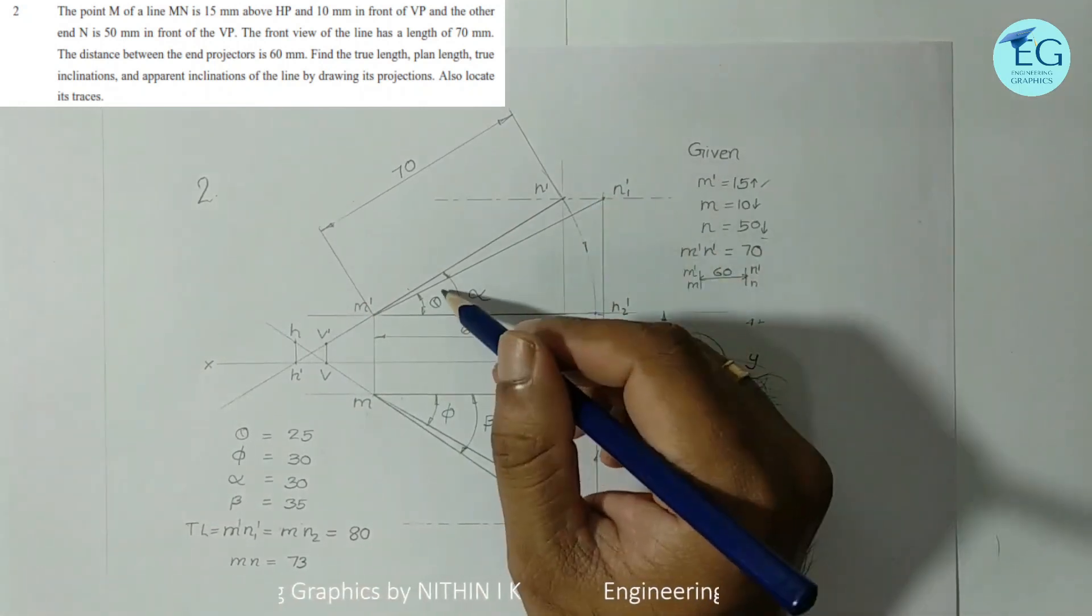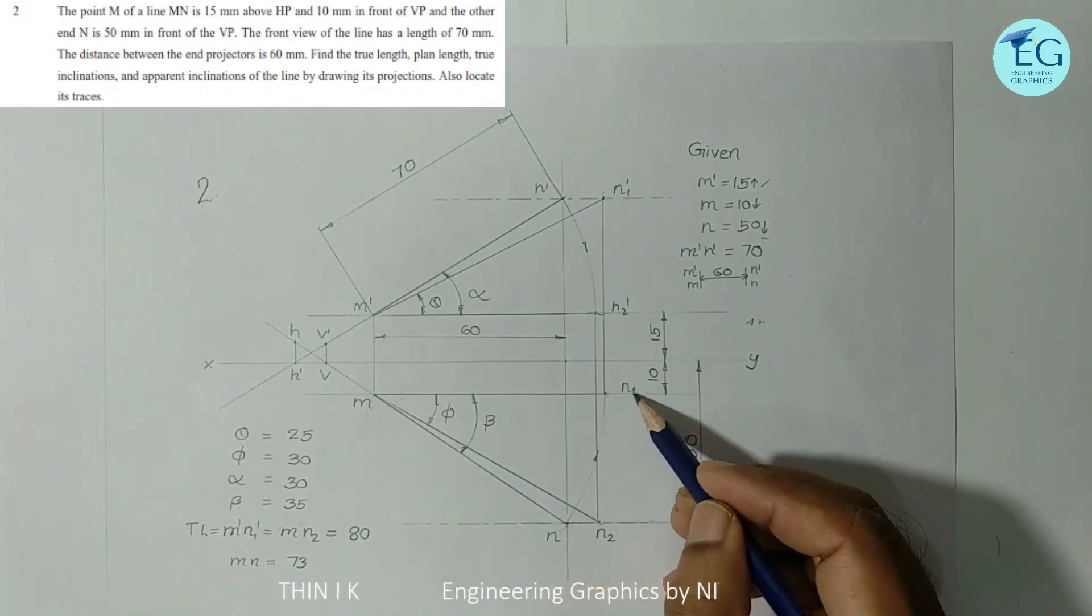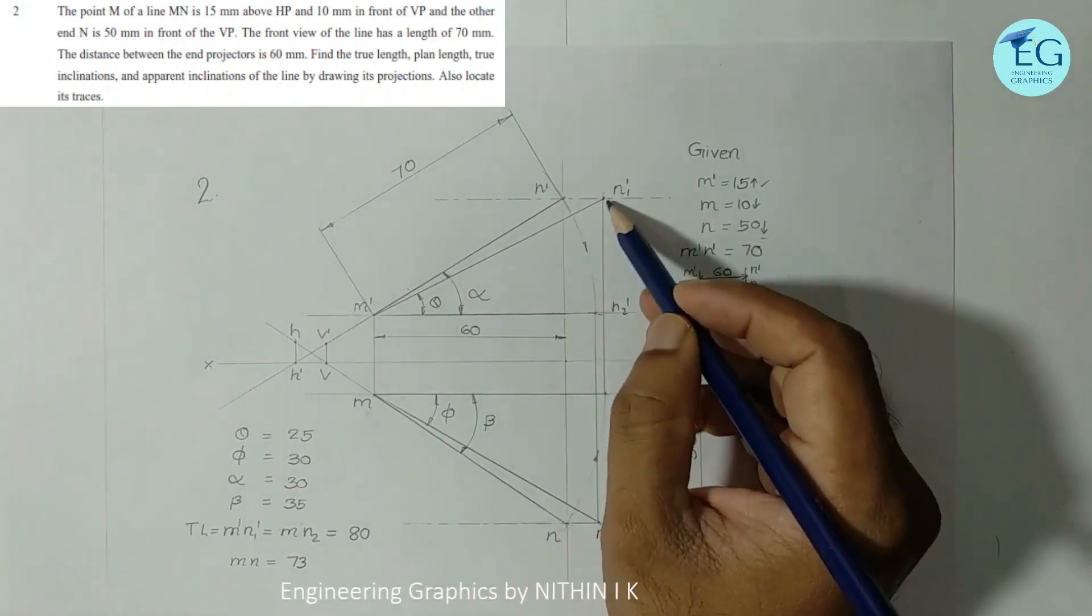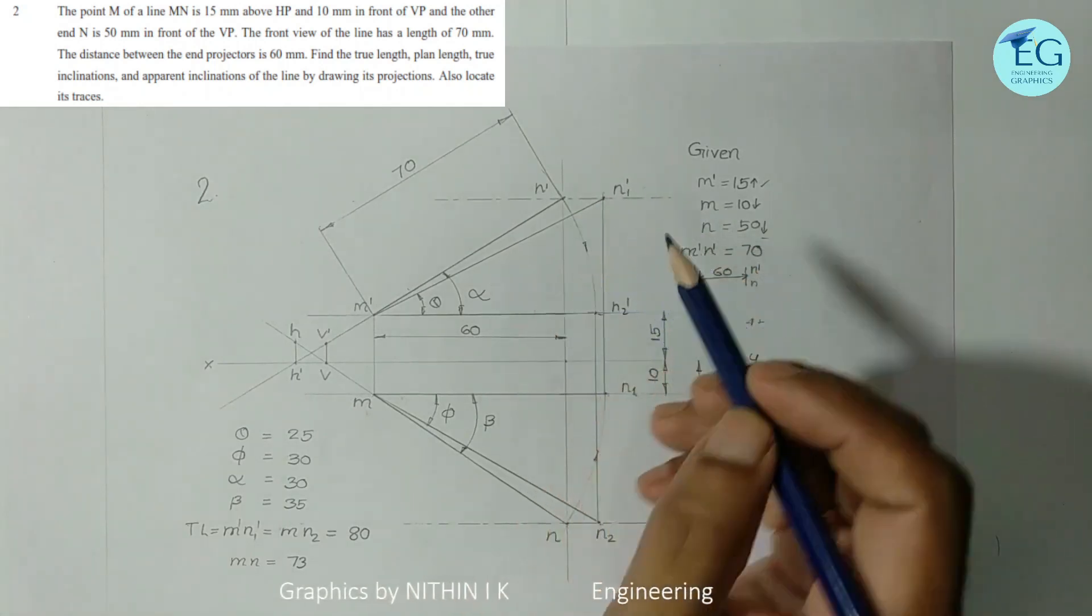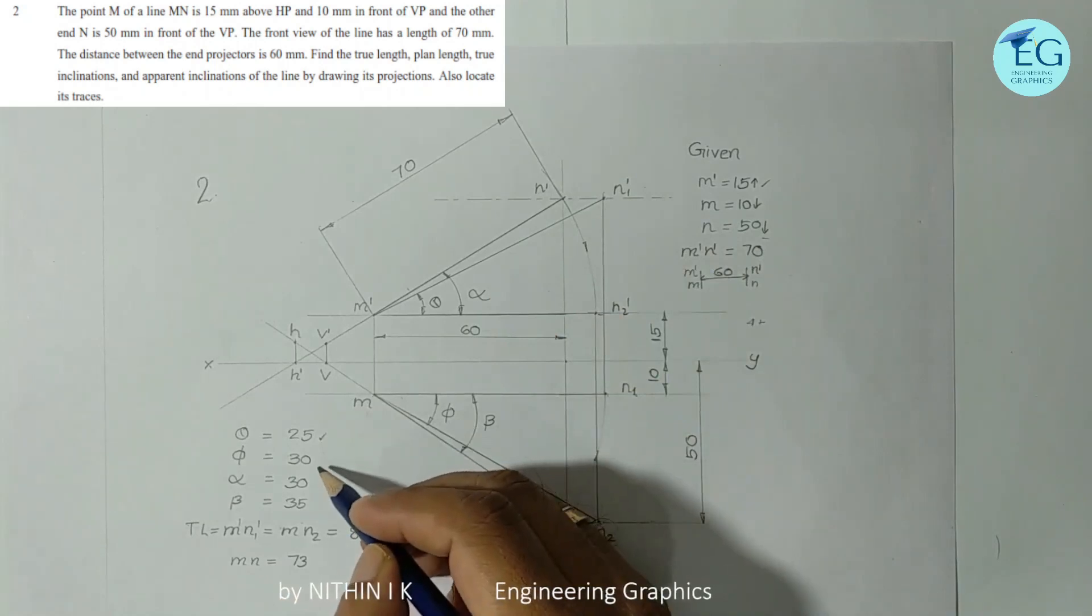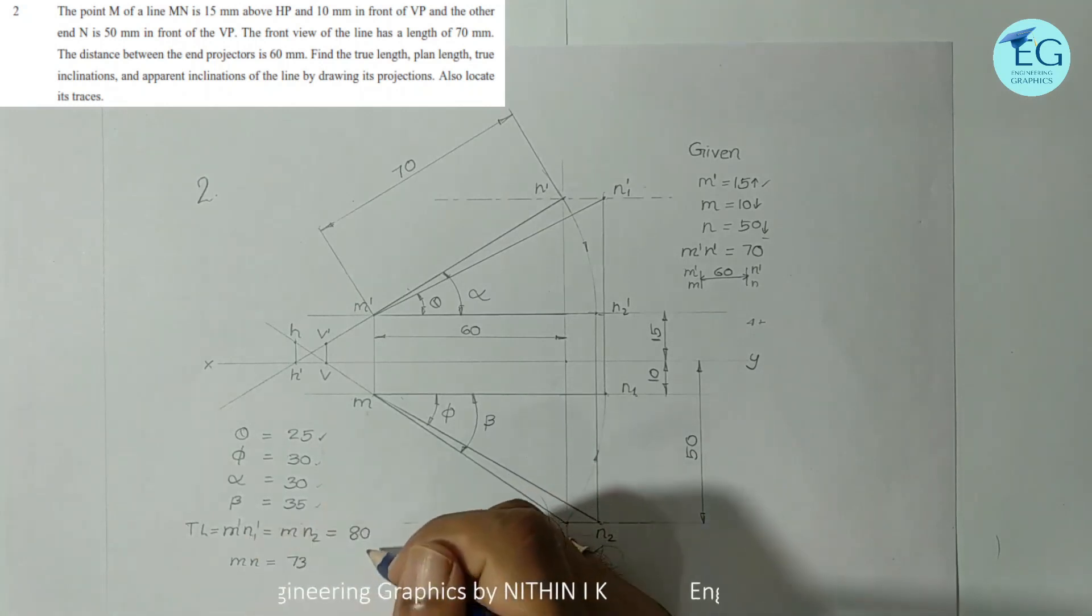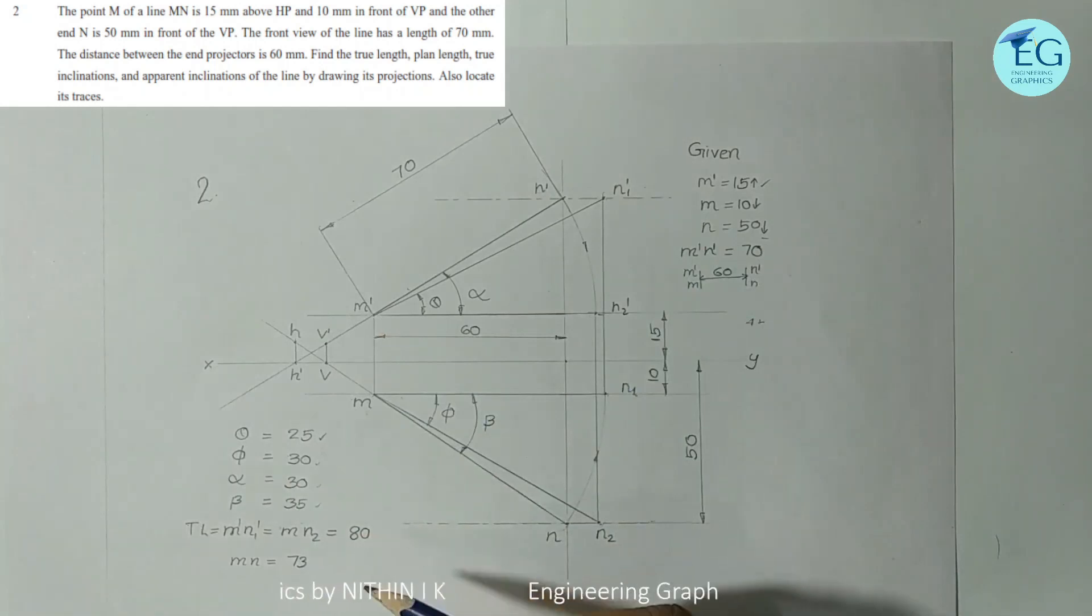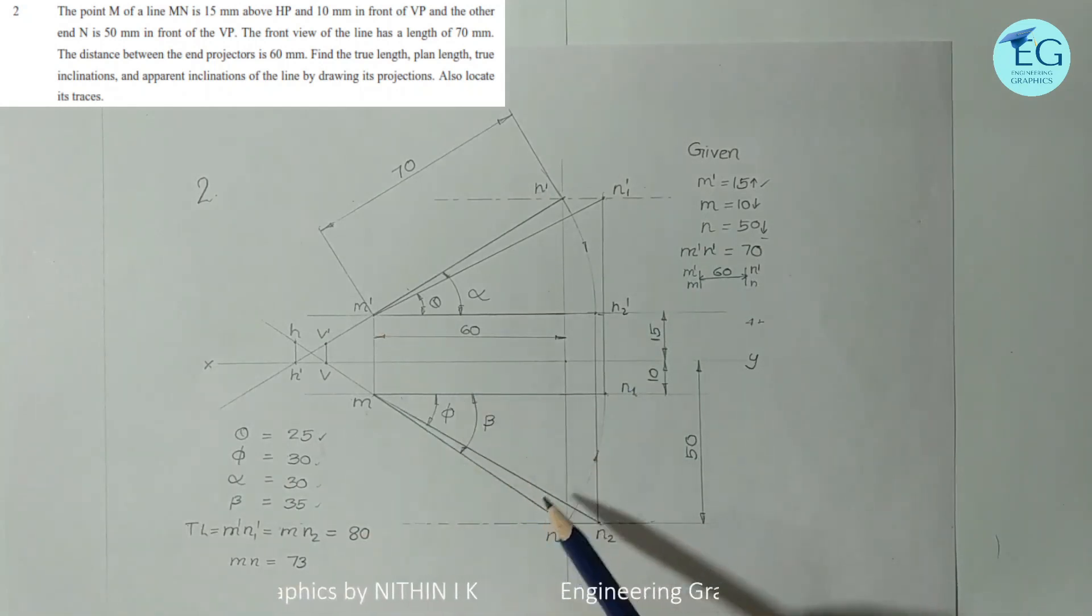With VP, n1 dash means top view. N1 to MN2 rotate XY pair. N1 located. N1 n dash means n locus. Alpha equals 30 degrees, beta equals 35 degrees, true length equals m dash n1 dash equals mn2 equals 80 mm. Top view length mn equals 73.